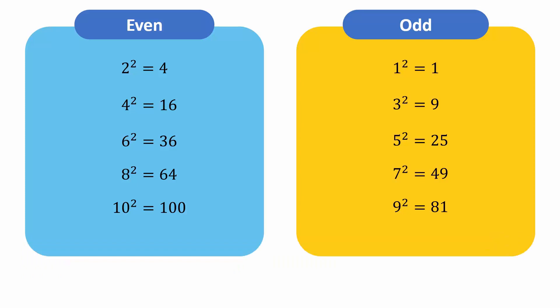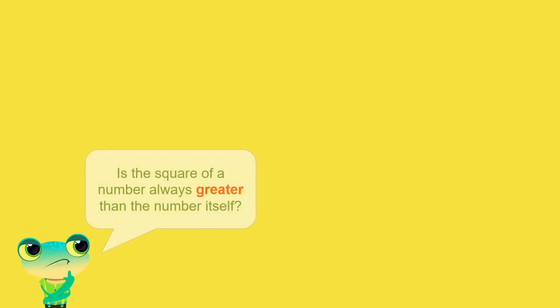Observe that the only thing common between these two columns is that the square of each number is either equal to or greater than the number itself. But can we conclude that the square of a number is always greater than the number itself?